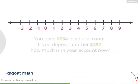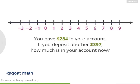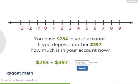Try using the calculator to solve this: suppose you have $284 in your bank account and you're depositing another $397. How much money is in your account now? $284 plus $397 equals $681, so now you have $681 in your account.